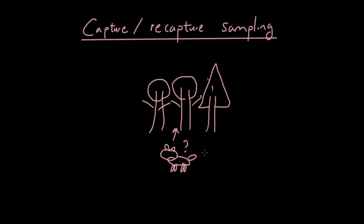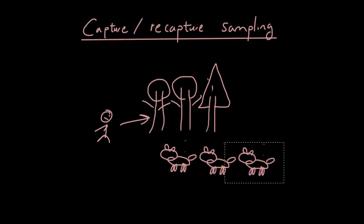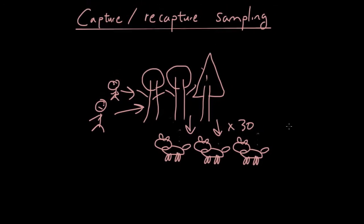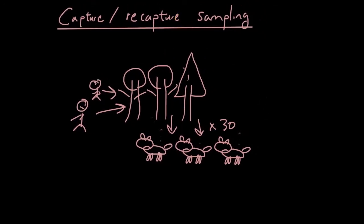So what happens is somebody would go into the forest and they would capture some of these rabbits. Let's say some people go into the forest and they capture 30 of these animals. So it's probably going to take them the whole day. And what they do is they tag each animal.